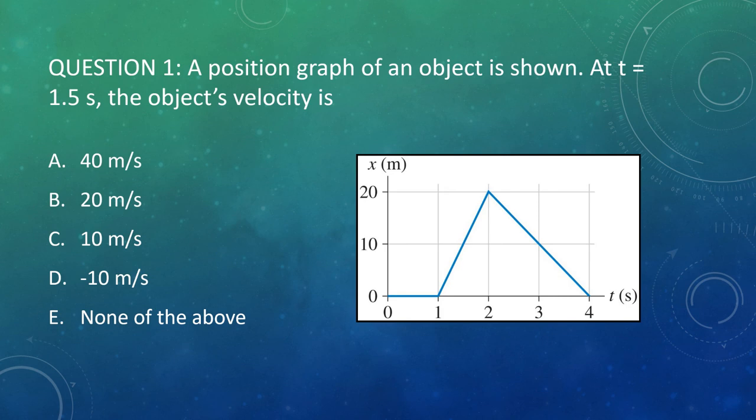Question one: a position graph of an object is shown. At time t equals 1.5 seconds, the object's velocity is what? Take a few moments to think about it — I recommend pausing the video before you let me say the answer.